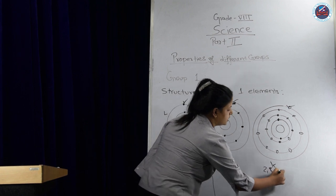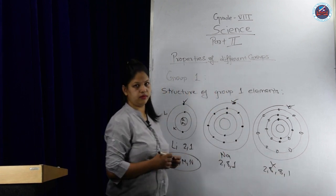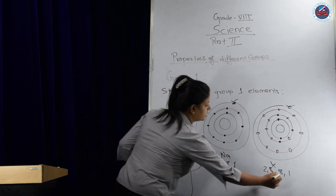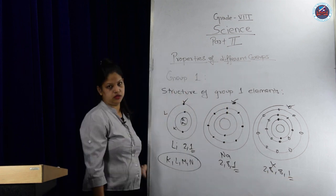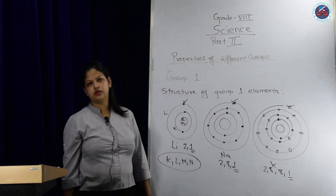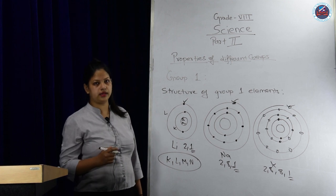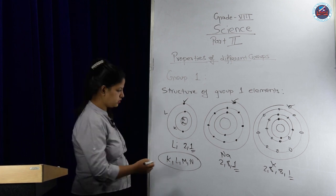If we check, this follows 2 and 1, this follows 2, 8, and 1, this follows 2, 8, 8, and 1. Everywhere 1 electron is extra in the last shell, each one of them.